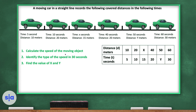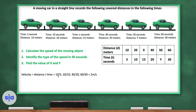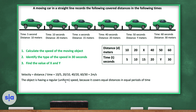Calculate the speed of the moving object and identify the type of speed. Speed equals distance divided by time: 10÷5, 20÷10, 40÷20, 60÷30 — all give 2 meters per second. The object has regular uniform speed because it covers equal distances in equal periods of time.